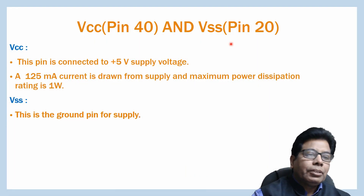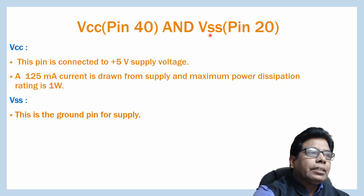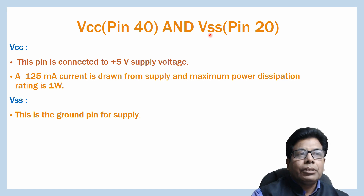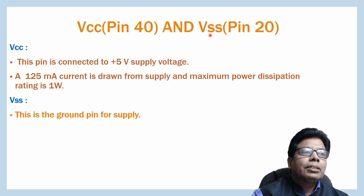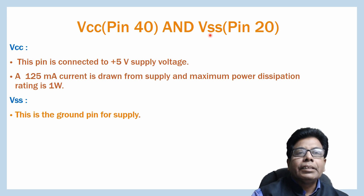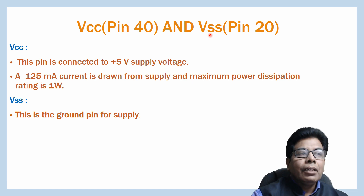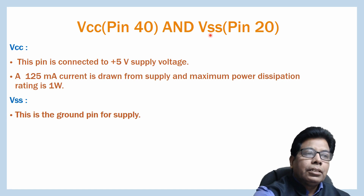Let us start with VCC and VSS. The VCC pin is connected to a plus 5 volt supply voltage. A 125 milliamps current is drawn from the supply and maximum power dissipation rating is 1 watt. VSS is the ground pin for the supply which will be used as the reference.